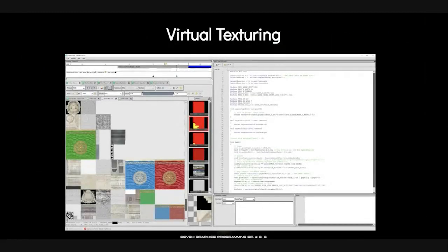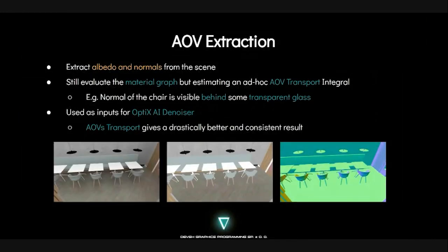Virtual texturing from RenderDoc — ours is a complete solution, unlike some of the talks you might find on terrain virtual texturing. We handle MIP tails, anisotropic filtering, and so on. We also have arbitrary AOV extraction. We still evaluate the material graph, but we have this AOV transport integral, which is kind of like the AOVs were lights. That makes the normal of the geometry you see through smooth glass actually appear there, and it does wonders for the OptiX AI denoiser.